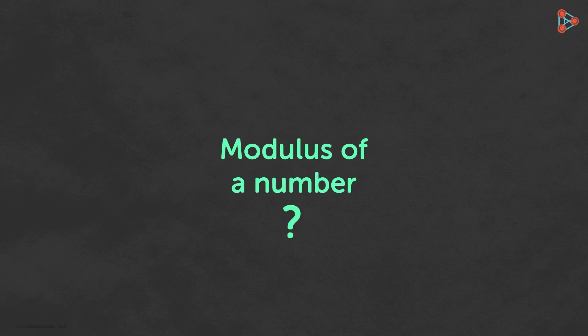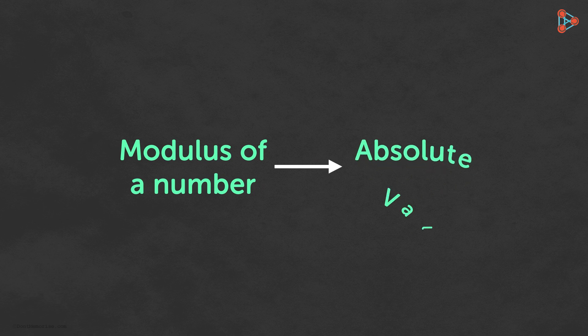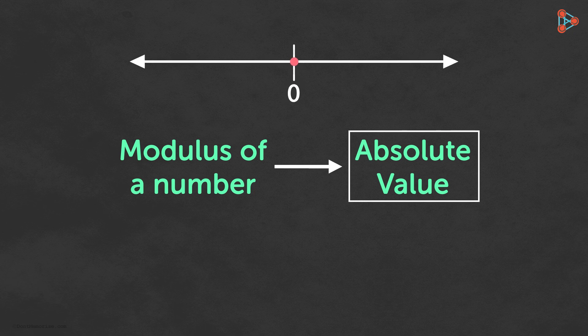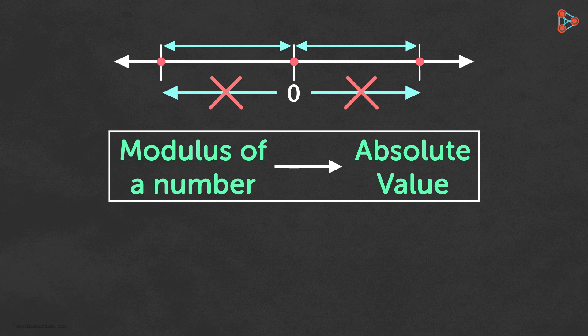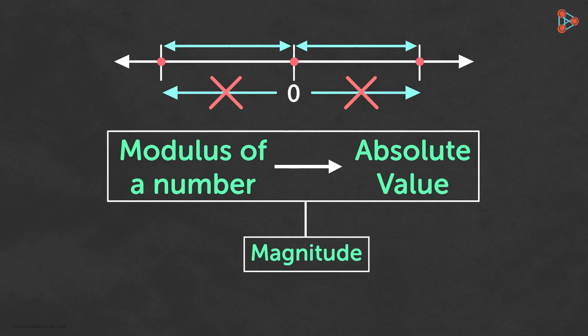What is the modulus of a number? The modulus of a number is nothing but its absolute value. We have learnt that the absolute value gives us the distance of a number from zero without considering the direction in which the number lies. So in other words, the absolute value or the modulus of a number gives us the magnitude of a number.